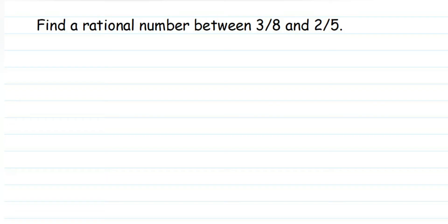Hey everyone, here is a question on rational numbers. The question is: find a rational number between 3/8 and 2/5. Now remember, there are infinitely many rational numbers between two given rational numbers. So how do we find these rational numbers? There are many methods, and this is the best method I feel you can use to find the rational numbers.